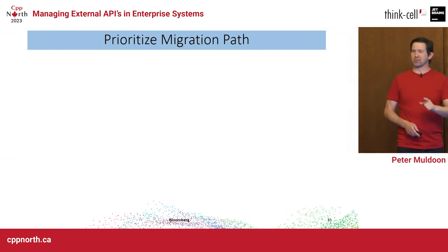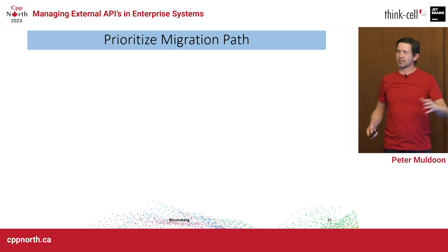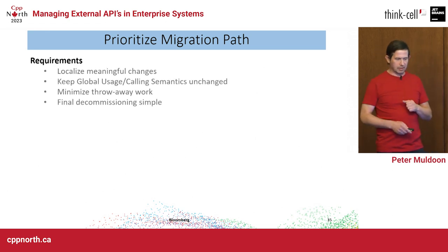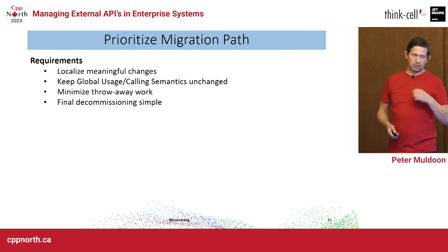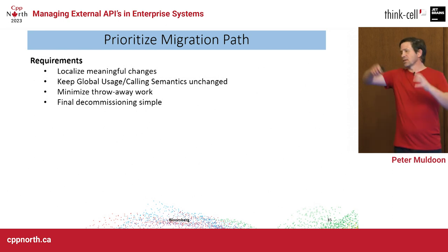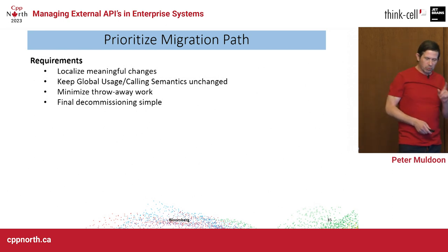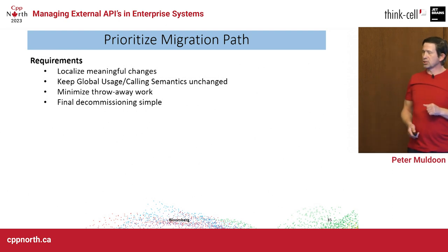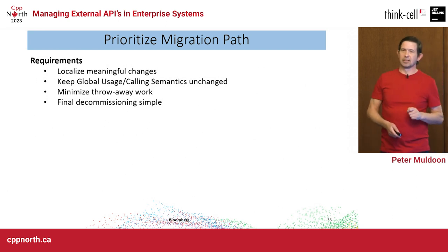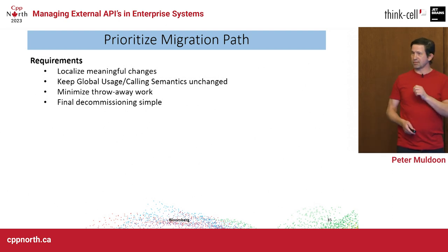Let's think in a different way — think about the full migration path. My requirements: I need localized, meaningful changes. Anything dealing with the second service should be localized in one or two files, not spread across hundreds of handlers. I keep global usage — the contracts with all handlers — unchanged. That means no sweeping changes throughout the system, which minimizes throwaway work and makes the final decommissioning simple. And because it's simple, it's a lot less risky.